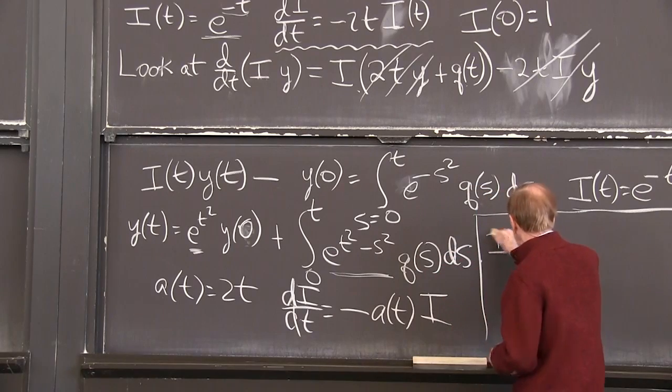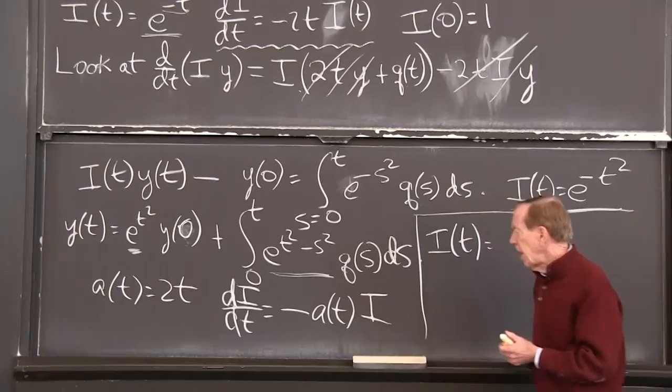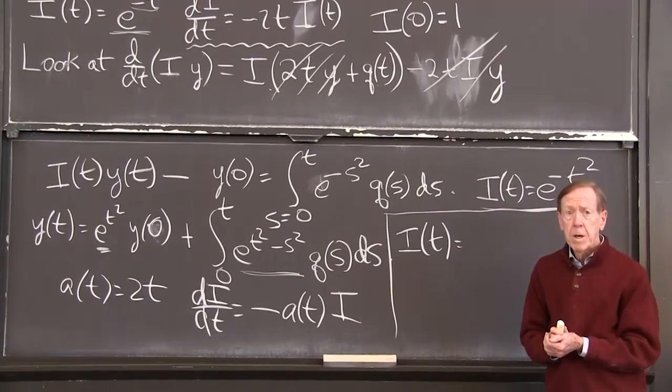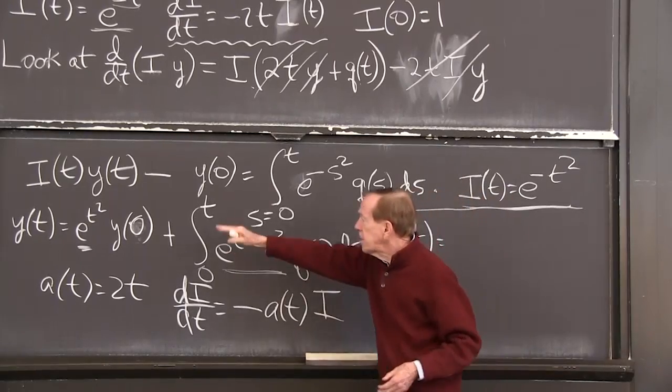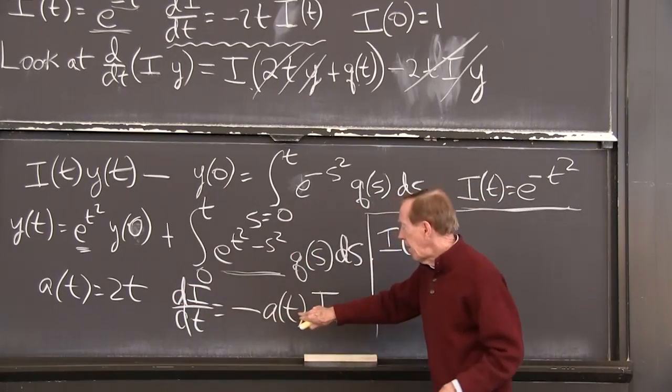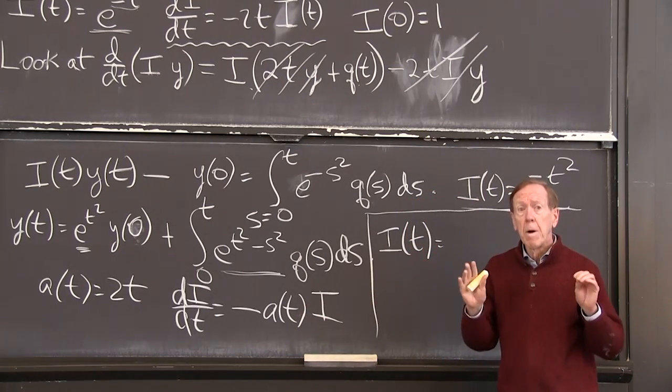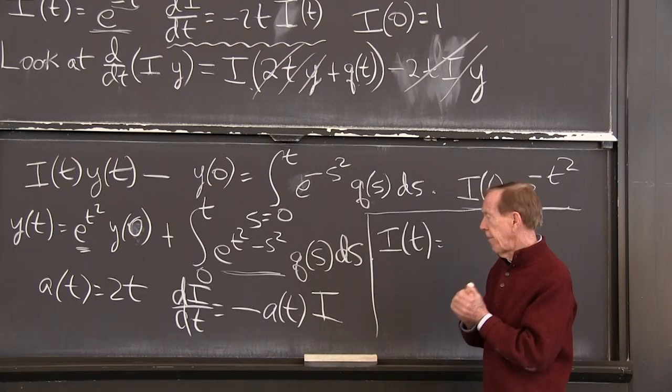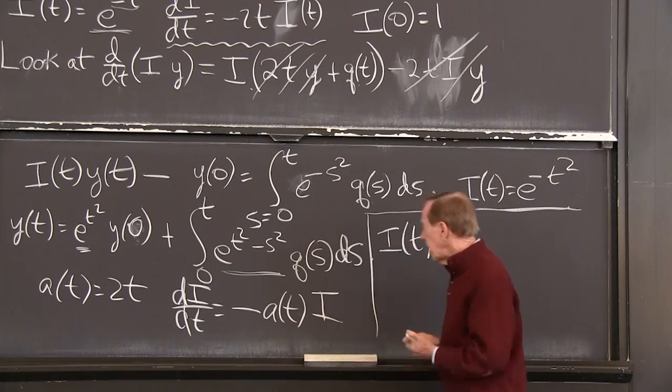Our construction rule is that the derivative should be minus a of t times i itself. That's how we chose the e to the minus t squared when a of t was 2t. Now I want to give the general rule. The general rule for the integrating factor is the solution to that equation. The solution to that equation is giving us the e to the t squared in the example.